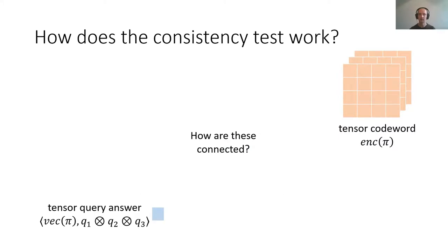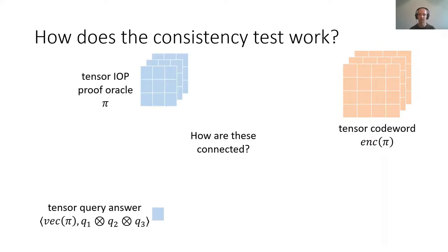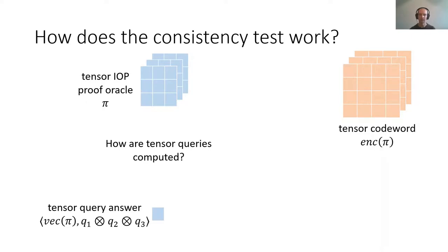How does our consistency test work? Somehow, we have to find a connection between tensor query answers and encodings of some piece of tensor IOP proof data. These are supposed to be connected by some tensor IOP proof oracle, which has been encoded to get the tensor codeword and queried to get the tensor query answer. So first, let's focus on how tensor queries can be computed from the tensor IOP proof oracles.